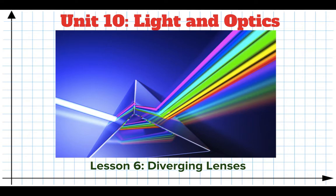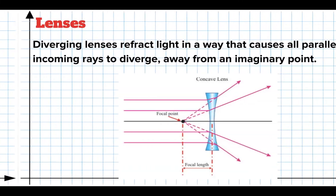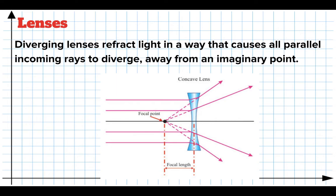This is lesson six, which is on diverging lenses. We're going to look at what happens when you have a lens which causes light to spread out. A diverging lens, which is also called a concave lens, refracts light in such a way that rays of light coming in parallel to the optical axis are bent away and they diverge from what appears to be a single point.